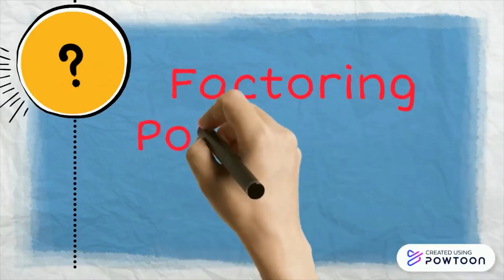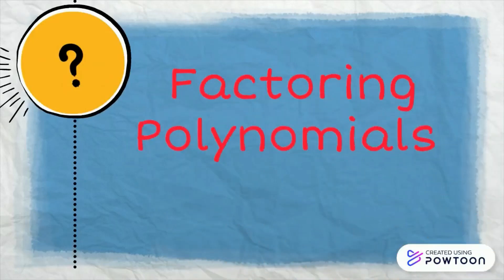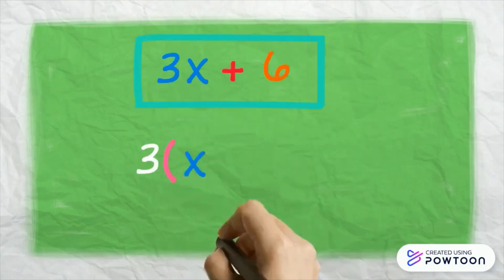We are now into factoring polynomials. Factoring is finding what to multiply together to get an expression. For example, 4 and 5 are factors of 20. When you multiply 4 by 5, the result is 20. The factors of the binomial 3x plus 6 are 3 quantity x plus 2. How did that happen?